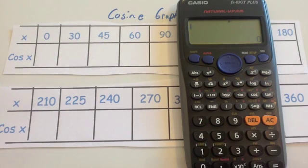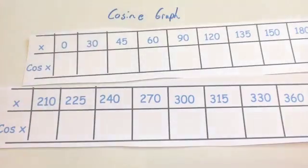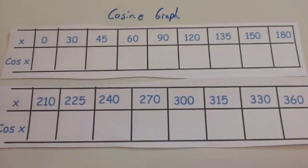In this video we're going to look at the cosine graph. So I've created a little table with x being 0, 30, 45, 60, 90, so on, 90, 120, 135, 150, 180.